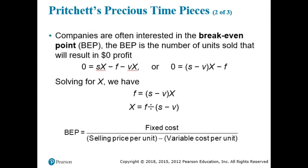Companies are often interested in the break-even point (BEP) — the number of units sold that will result in $0 profit. In order to find this, we set our profit equation equal to zero and solve for X. The break-even point equals fixed cost divided by (selling price per unit minus variable cost per unit). Looking at the Pritchett's Precious Time Pieces example, the break-even point equation would be applied using those values.